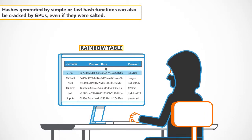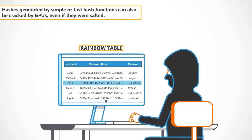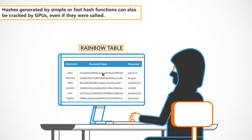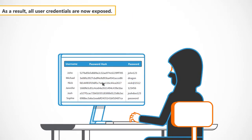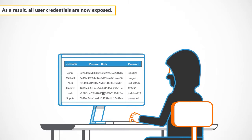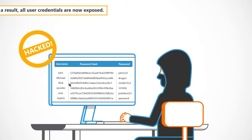Hashes generated by simple or fast hash functions can also be cracked by GPUs, even if they were salted. As a result, all user credentials are now exposed.